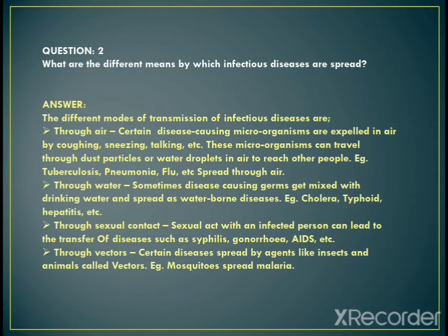The next means is through water. Sometimes disease-causing germs get mixed with drinking water and spread as water-borne diseases. Examples are cholera, typhoid, and hepatitis — caused because of unclean or unhygienic water. The next is through sexual contact. Sexual contact with an infected person can lead to the transfer of disease-causing microorganisms. Examples of sexually transmitted diseases are syphilis, gonorrhea, and AIDS.